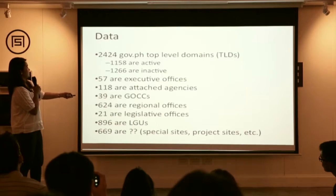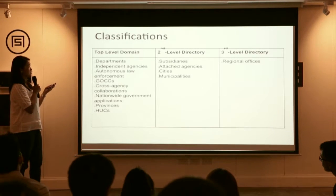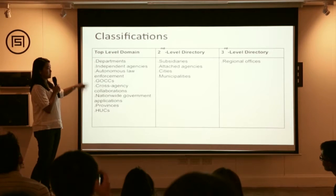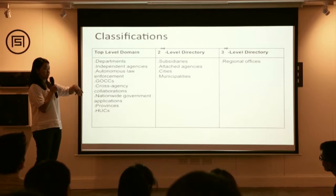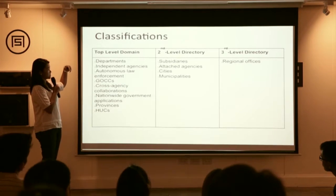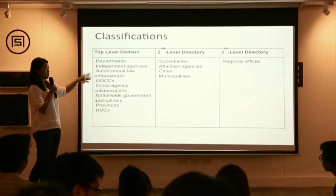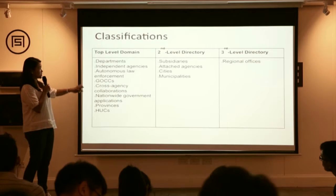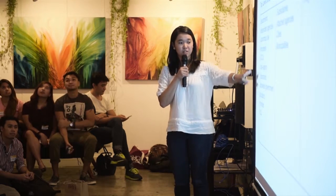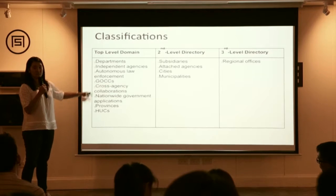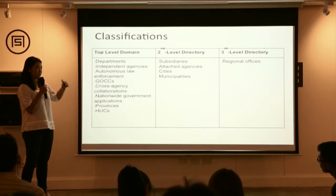For the naming policy, we came up with this structure. For top-level domains, based on what we previously identified, the structure should be: departments, independent agencies (which answer directly to the president), autonomous law enforcement agencies like MMDA, GOCCs, cross-agency collaborations for big nationwide projects — for example, our project is a nationwide project, a partnership with DOST and other department agencies.